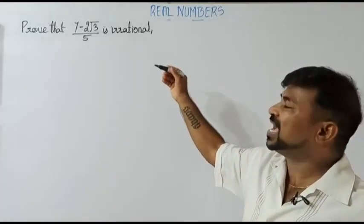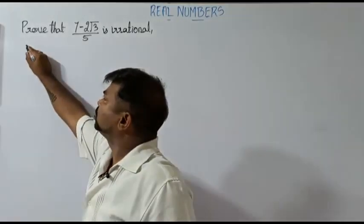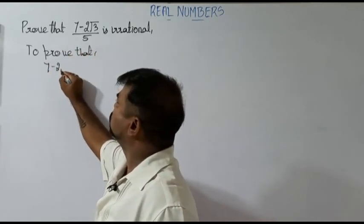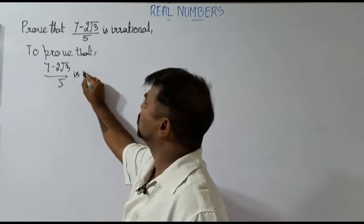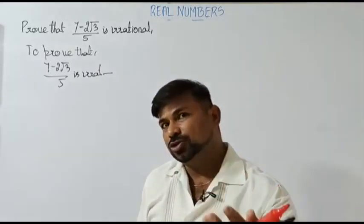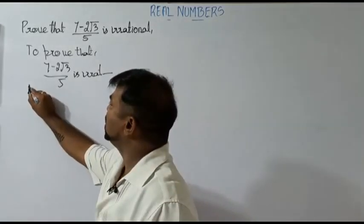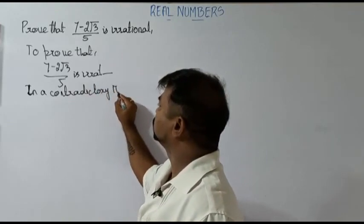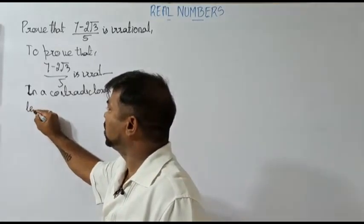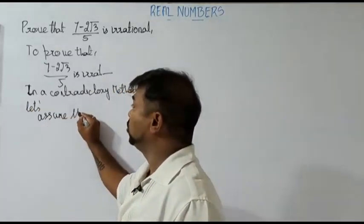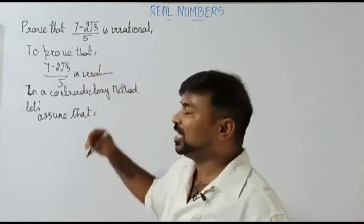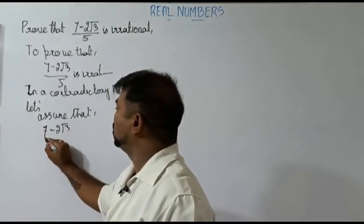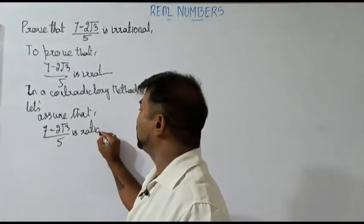The question says: prove that (7 - 2√3) / 5 is irrational. So to prove that, what are we supposed to prove? That (7 - 2√3) / 5 is irrational. In the contradictory method, let's assume the opposite of that — so we assume (7 - 2√3) / 5 is rational.